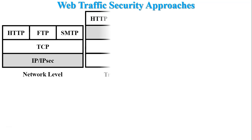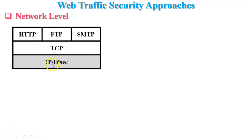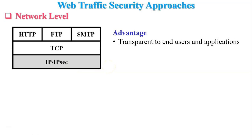The first approach is network-level security. Web security at the network level can be achieved through IP, since only internet protocol is used in the network layer. Security based on internet protocol is called IPsec — IP Security. The advantage of IPsec is that it is transparent to end users and applications and provides a general-purpose solution. Another advantage is filtering capability, so that only selected traffic needs to incur the overhead of IPsec processing.